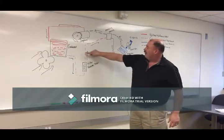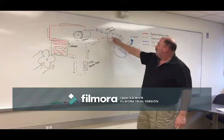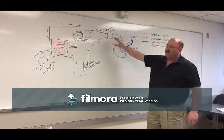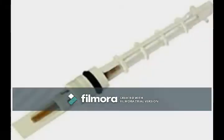This liquid then moves up into the metering device. This is an early metering device called an orifice tube. Like the name implies, it has a regulated orifice size that meters the refrigerant through it.